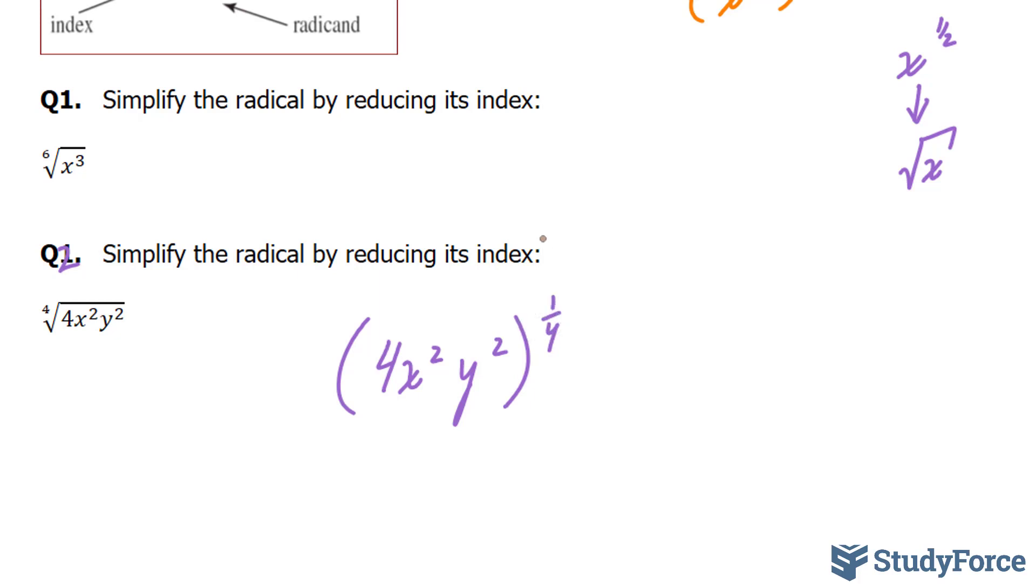I'll distribute this exponent now to each of these components. Let's start with four. Four to the power of a quarter. The way you can approach this is you can change this form into two to the power of two. Watch what happens. You have two to the power of two to the power of a quarter. I'll multiply two and a quarter together, and that gives me half. So we have two to the power of half, and this is the square root of two.